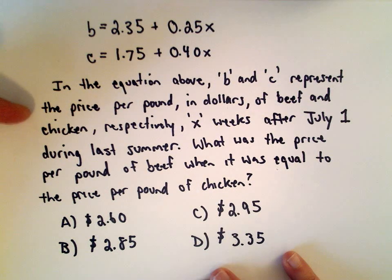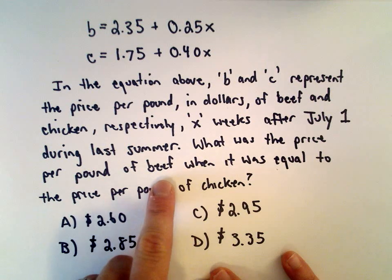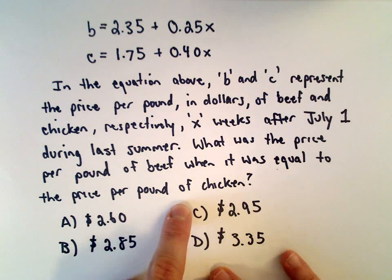B and C represent the price per pound in dollars of beef and chicken respectively, X weeks after July 1st during last summer. What was the price per pound of beef when it was equal to the price per pound of chicken?